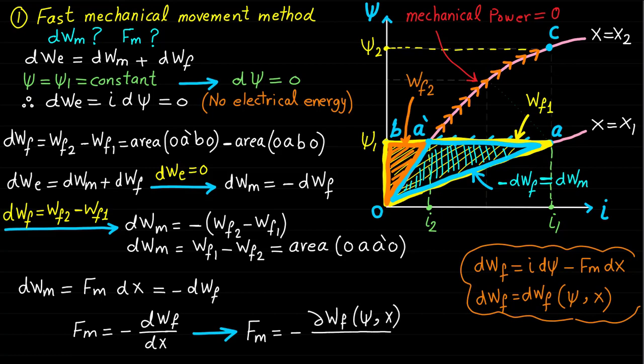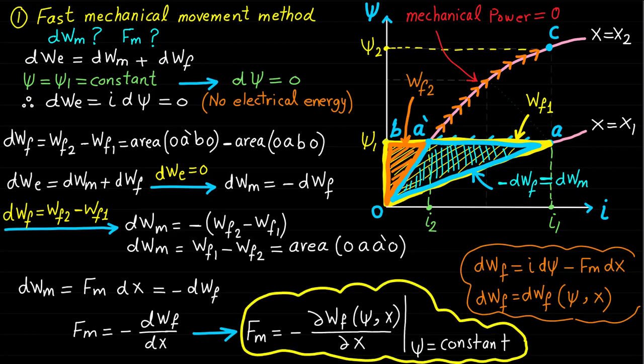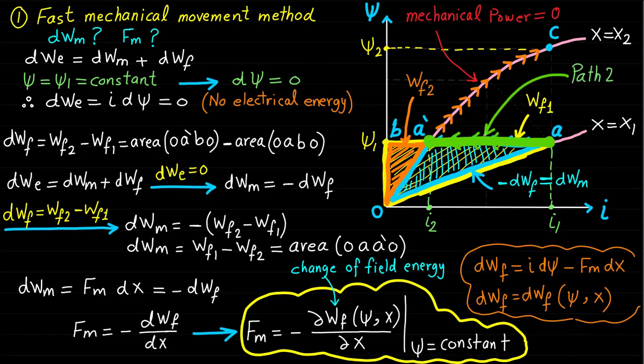Note that keeping the magnetic field linkage ψ constant in the force expression is a pure mathematical requirement during the derivation and has nothing to do with the actual operation of the single-excited electromechanical energy system. Path 2 from A to A-dash under constant ψ₁ is valid mathematically only and does not represent the actual operation of the system.